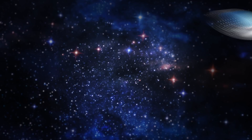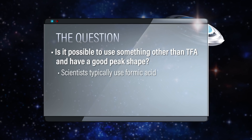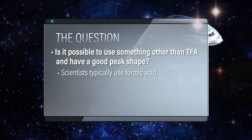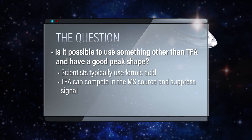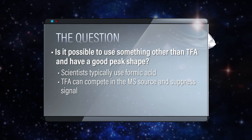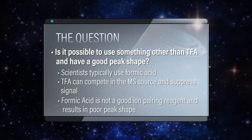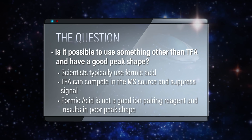But it really suppresses their signal. So they want to know if it's possible to use something else and get good peak shape. That's a great question. Typically scientists use formic acid because they want to get away from using ion pairing reagents like TFA, because TFA competes in the source and suppresses the signal — it creates all sorts of problems. Unfortunately, formic acid isn't really a good ion pairing reagent, and then you get very poor peak shape.